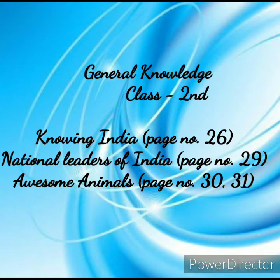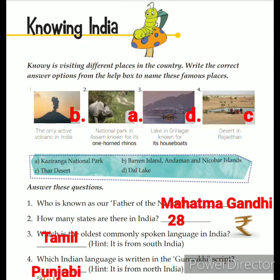Let's move ahead. First we will do page number 26, where Noa is visiting different places in the country. Select the correct answer options from the help box to name these famous places. Look at the first picture — the only active volcano in India. You will write here option B: Barren Island, in the Andaman and Nicobar Islands.